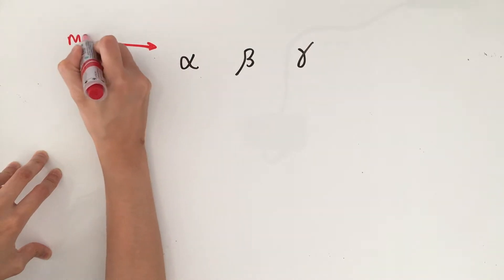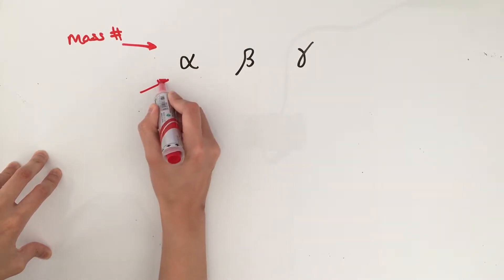So before we begin, let's just write down the mass number and atomic number for alpha, beta, and gamma.